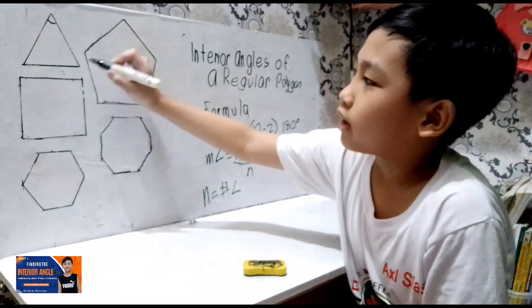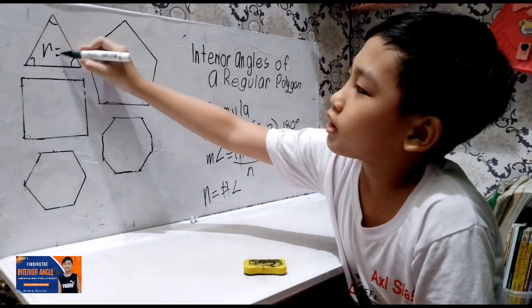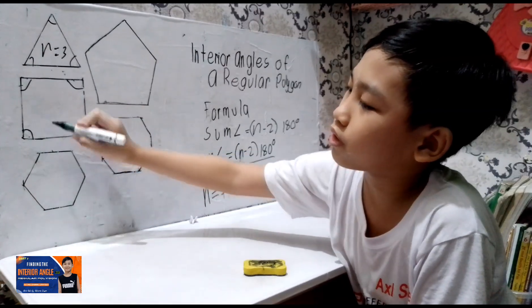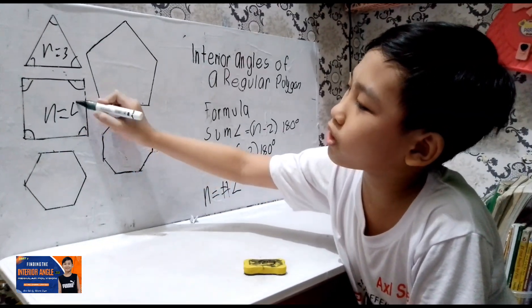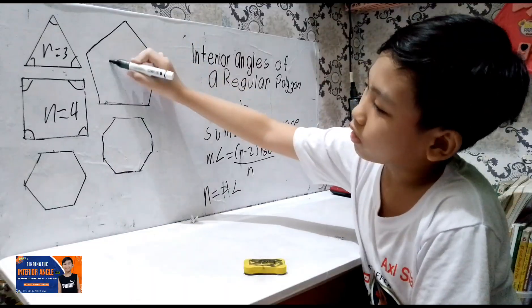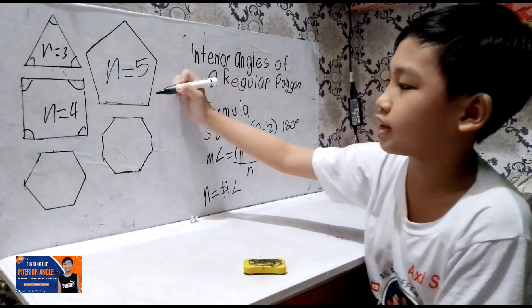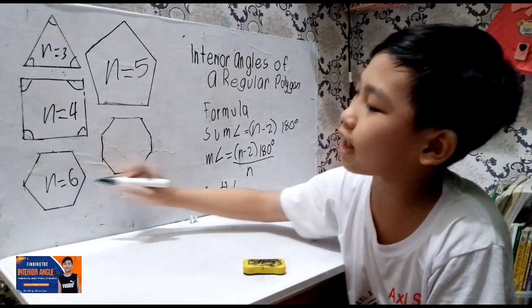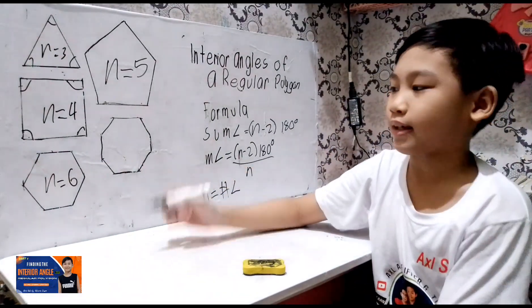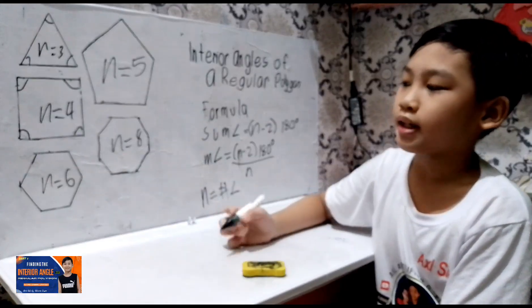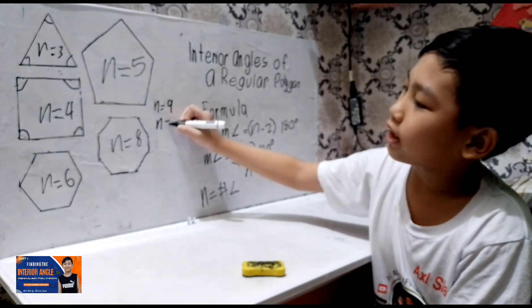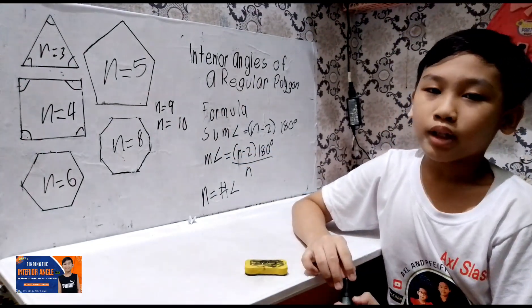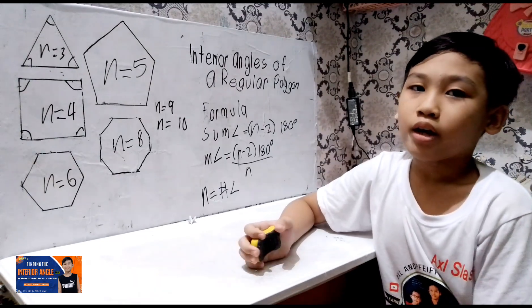Triangle has 3 angles. Square has 4 angles. Pentagon has 5 angles. Hexagon has 6 angles. Heptagon has 7 angles. Octagon has 8 angles. Nonagon has 9 angles. And Decagon has 10 angles. Now, let's just be familiar with the angles of 11 and more.